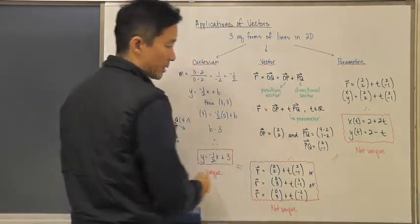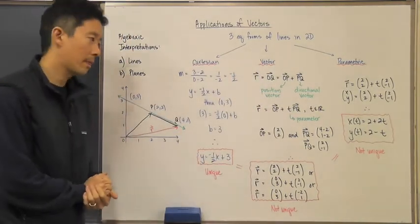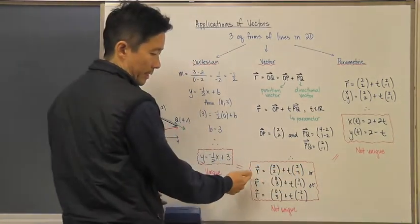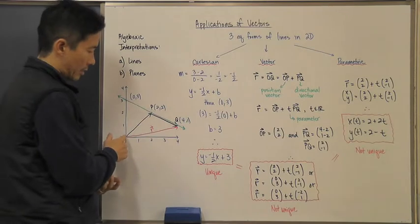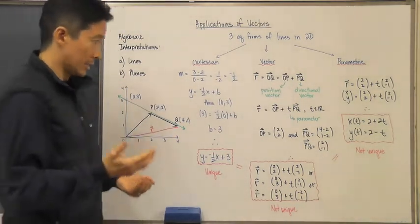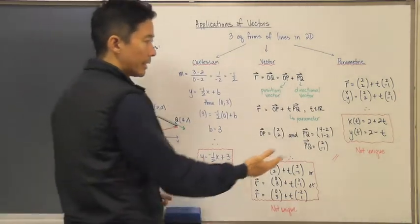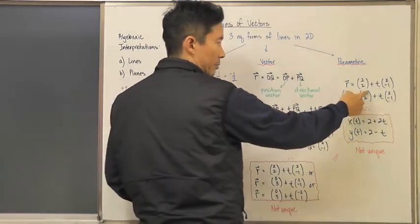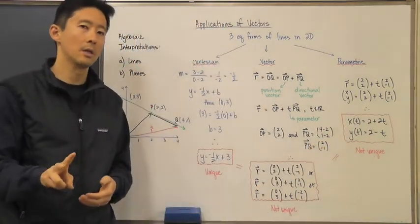So those are three different vector equation representations of this line. For the parametric form, take any one of these — say r = (2, 2) + t(2, −1). The resultant vector r points to a coordinate (x, y) on the line, so r = (x, y). Breaking this into components, x and y each equal the corresponding components of the sum.